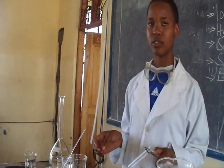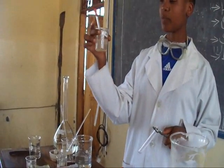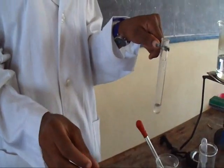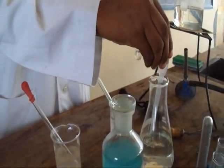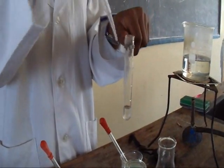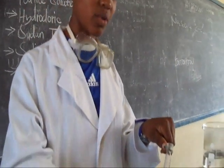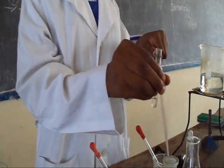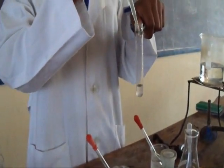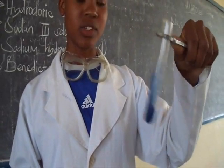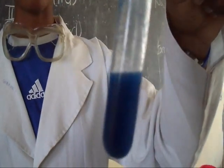Now we are going to test for the presence of protein in the food sample. We have food sample N which contains protein, and food sample H which does not contain protein. The first step is to take 2 cc of the food sample, then add 1 cc of sodium hydroxide and shake it. Then we add 1 cc of copper sulphate. As we can see, the colour changes to purple, which shows that the food sample contains protein.